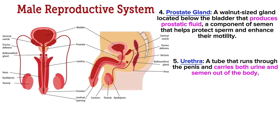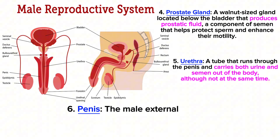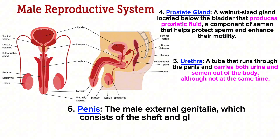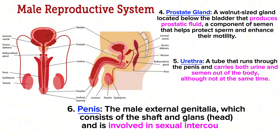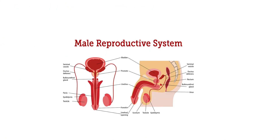The urethra is a tube that runs through the penis and carries both urine and semen out of the body, although not at the same time. The penis is the male external genitalia, which consists of the shaft and glans, or head, and is involved in sexual intercourse and urination.